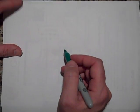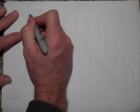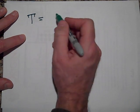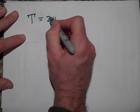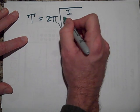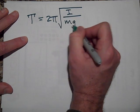We ended up with that the period of a physical pendulum is equal to 2π all over the square root of I divided by Mgd.